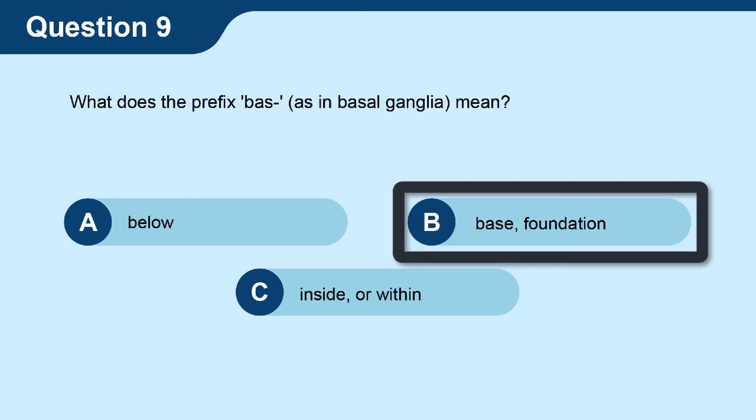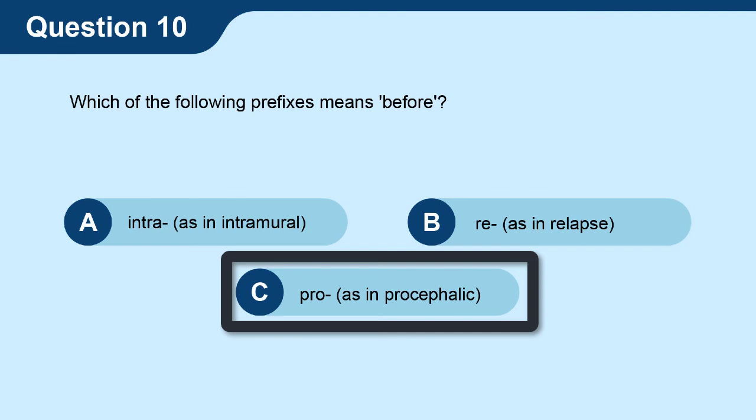Question 9, what does the prefix bas as in basal ganglion mean? The answer is B, base, foundation. Question 10, which of the following prefixes means before? The answer is C, pro as in procephalic.